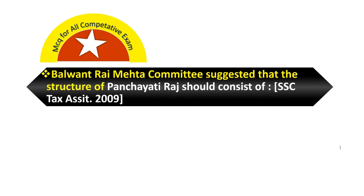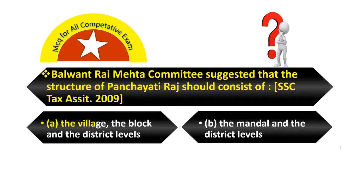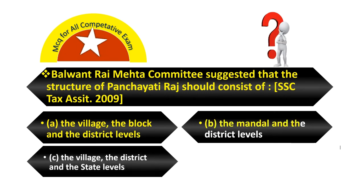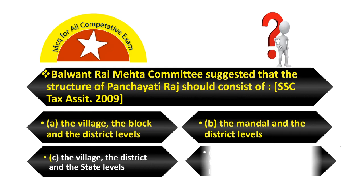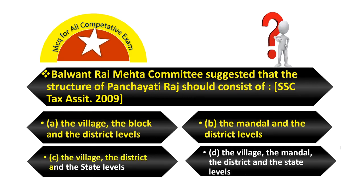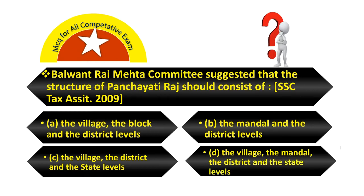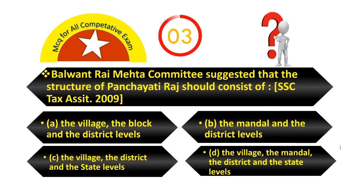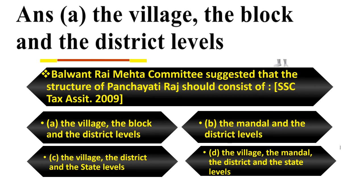Balwant Rai Mehta Committee suggested that the structure of Panchayati Raj should consist of: Option A, the village, the block and the district level. Option B, Mandal and the district level. Option C, the village, the district and the state level. Option D, the village, the mandal, the district and the state level. Your answer is the village, the block and the district levels.